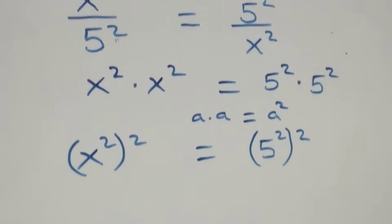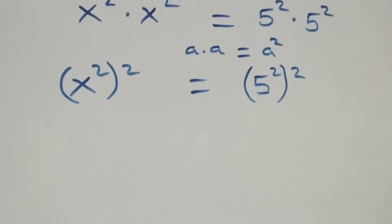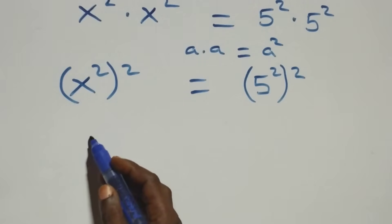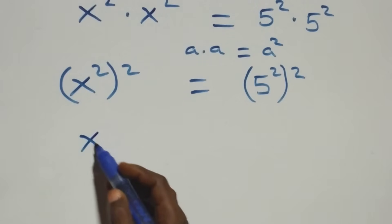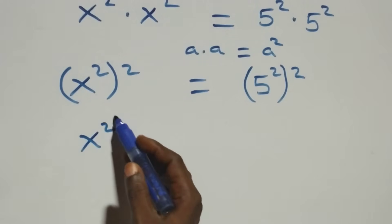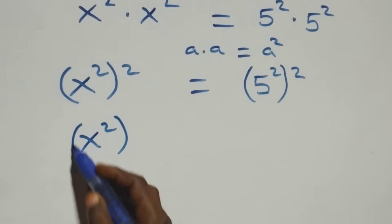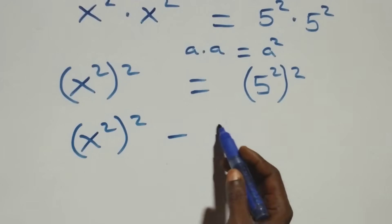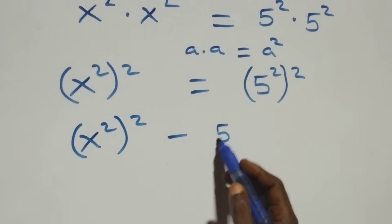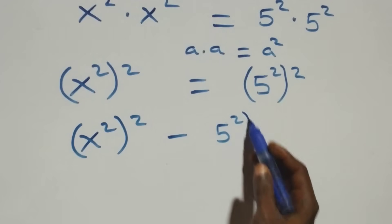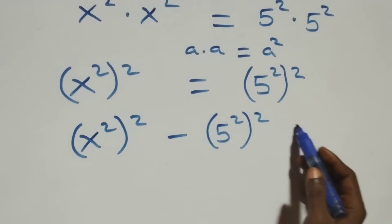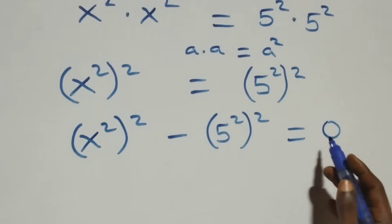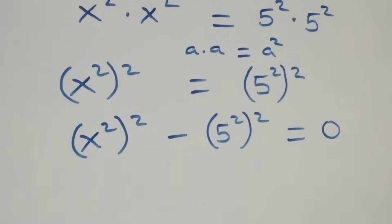From here, take the left hand side to the right hand side, and this becomes x squared squared minus five squared squared, equals zero on this side.